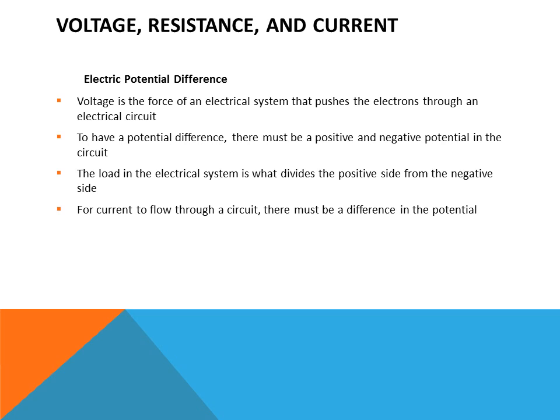What is voltage? Voltage can be called a potential difference. It is the force of the electrical system that pushes electrons through an electrical circuit. Comparing it to water flow, water force is measured in PSI (pressure per square inch), while voltage is the measurement of the force pushing electrons through the wire. To have a potential difference, there must be a positive and a negative in the circuit. The load divides the positive side from the negative side, and there will always be a difference between the two sides — the potential difference. For current to flow through a circuit, there must be a difference in current flow.